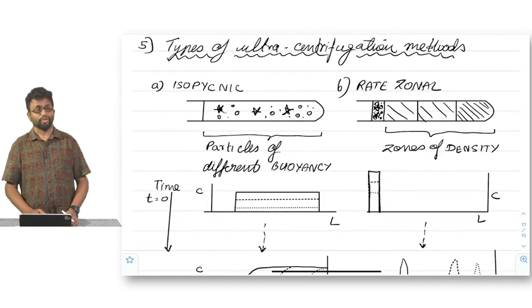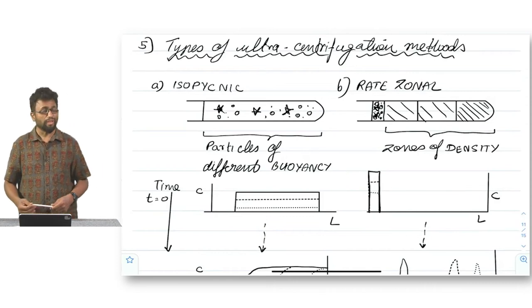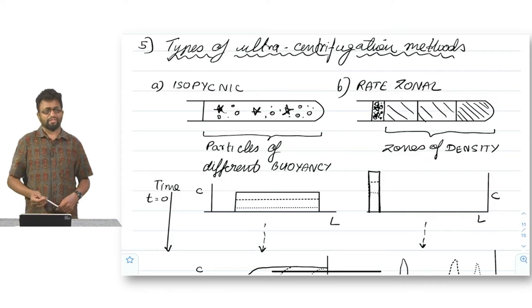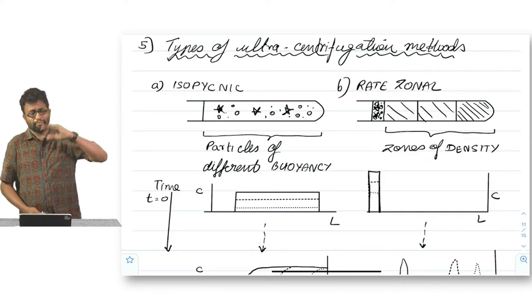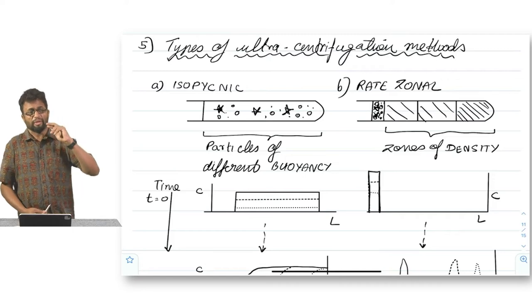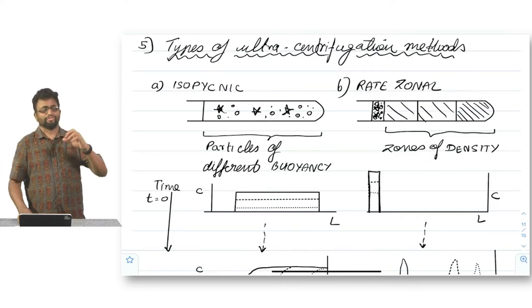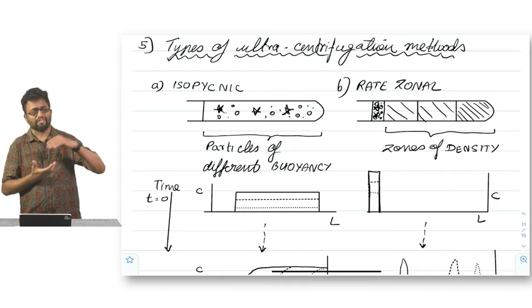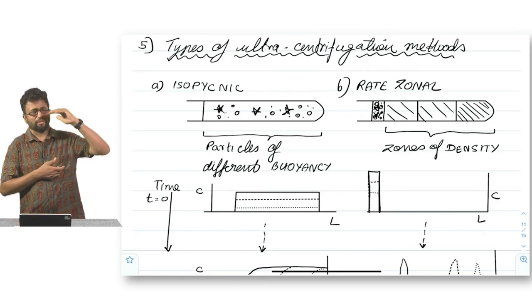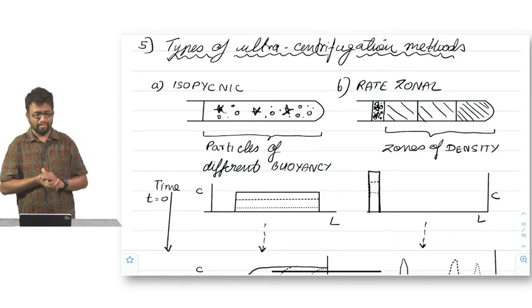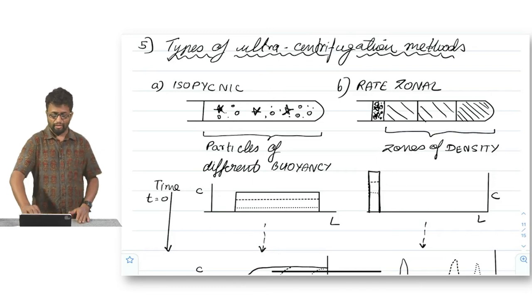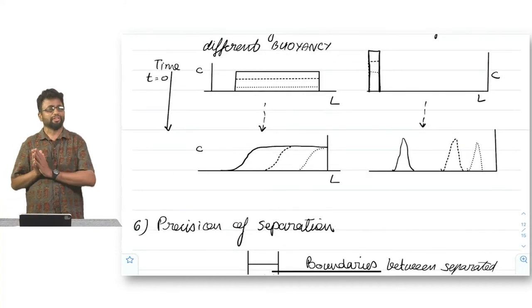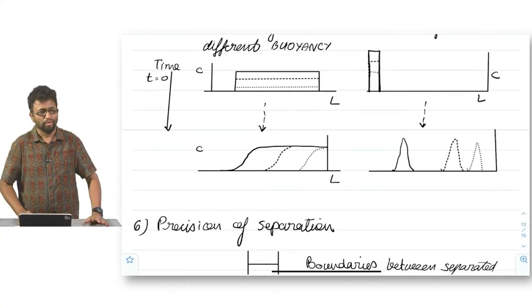So what are the types of ultracentrifugation methods that we can typically see? So the two that we are going to discuss right now are isopycnic and rate zonal. So in isopycnic, the idea is that you can centrifuge a mixed sample based on the fact that you already know that the particle that you want to centrifuge, let us say it is nuclei, you have crushed some cancer cells, you made a lysate, resuspended it in buffer, and you know that the nucleus has a different buoyancy as compared to the membrane, as compared to the endoplasmic reticulum, as compared to the Golgi. So knowing this, if you now centrifuge this mixture fast enough, over time you will get different zone, different regions in which the different organelles will form. And this is allowing you to separate them out.